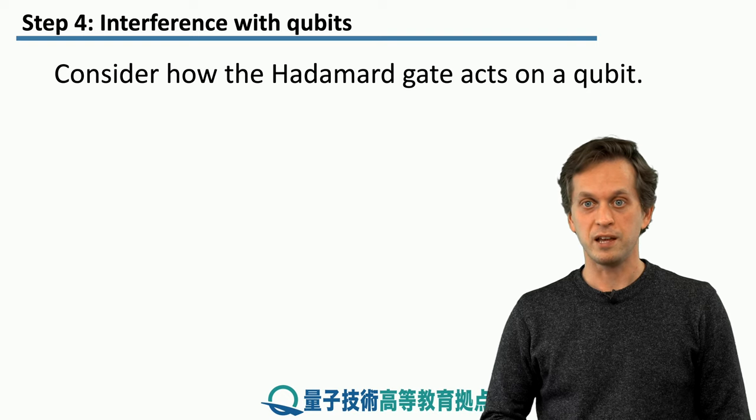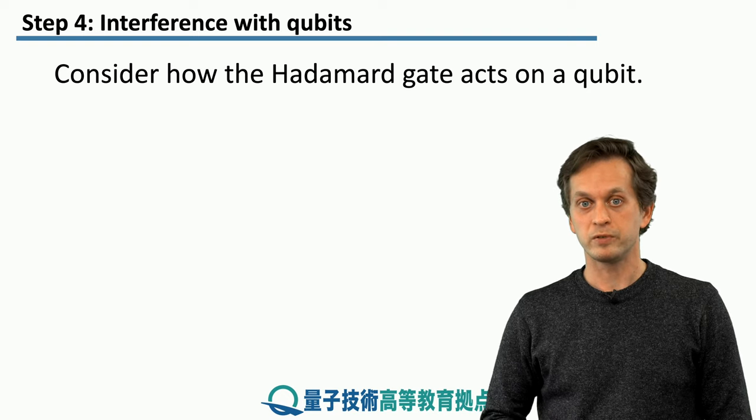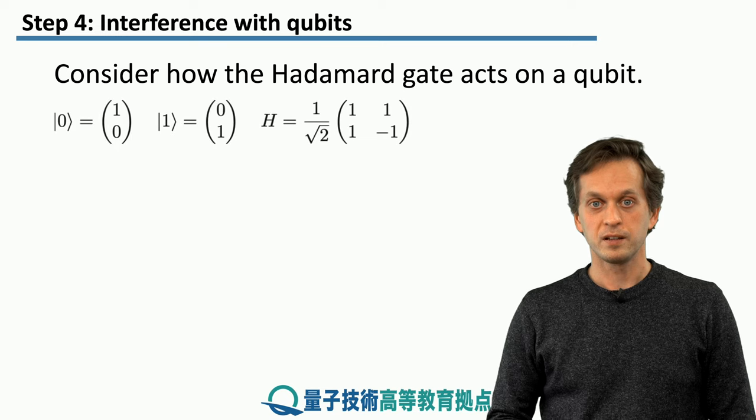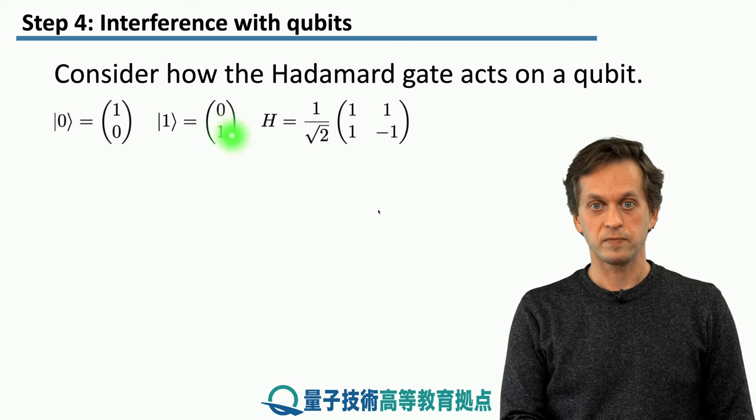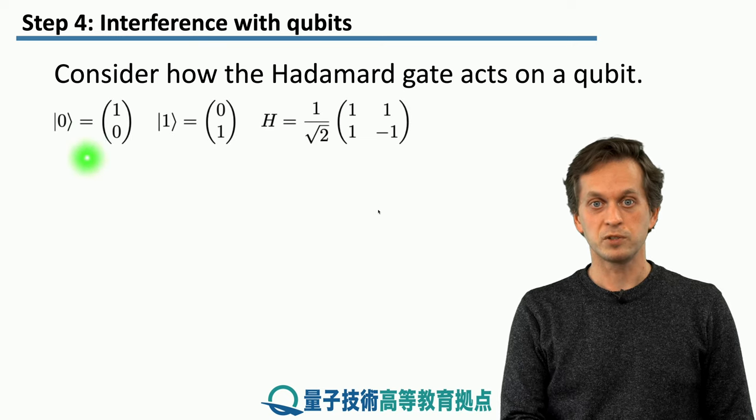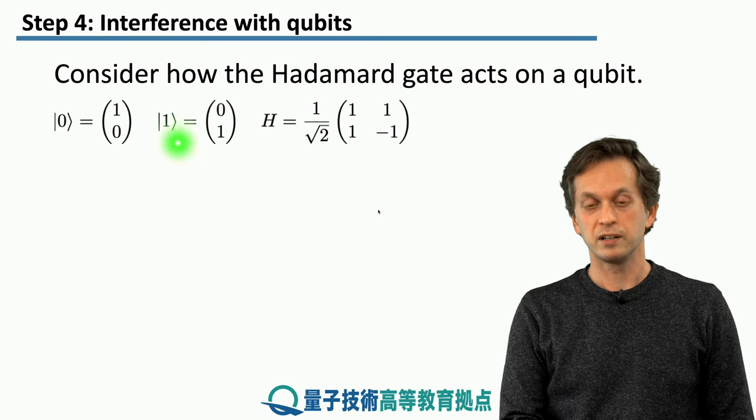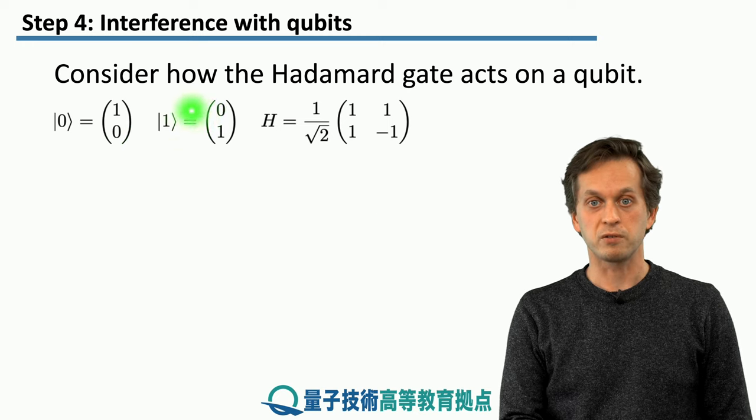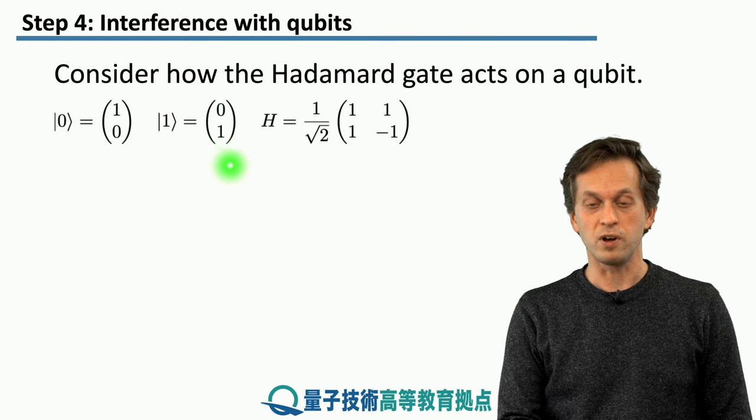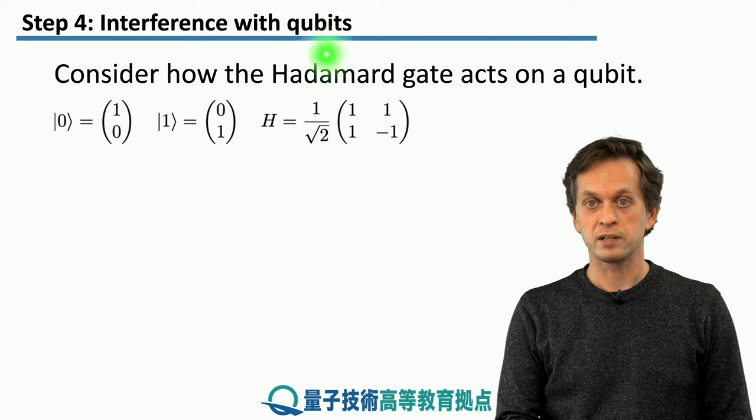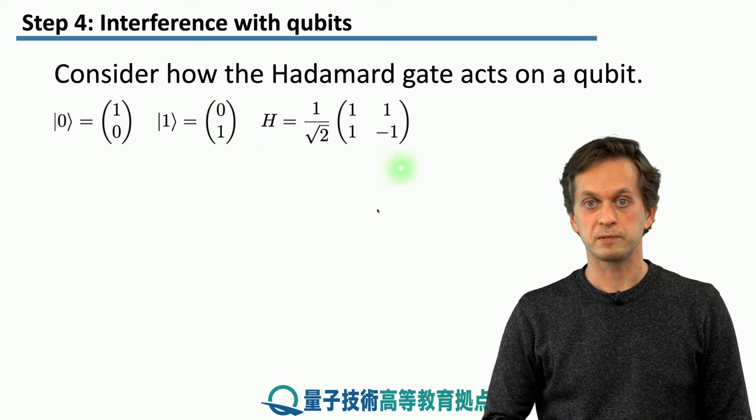Consider that we have a Hadamard gate, and we apply it on the state of a qubit. So we will consider two states. One is our state 0, which is given by this state vector. Another one is 1, which is given by its orthogonal friend, 0, 1. And the Hadamard gate is given by this transformation matrix.